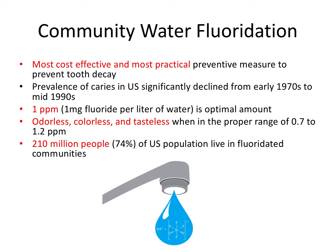This slide is filled with high-yield facts for the board exam. Community water fluoridation is a very effective public health intervention, initiated in the United States since 1945 in Grand Rapids, Michigan. It's the most cost-effective and most practical preventive measure to prevent tooth decay — there's minimal cost to society and no cost to the individual. The prevalence of caries in the US significantly declined from the early 1970s to the mid-1990s due in part to community water fluoridation and other public health measures.